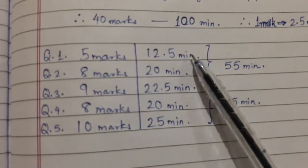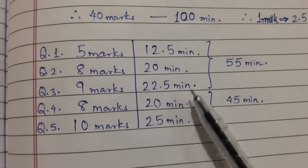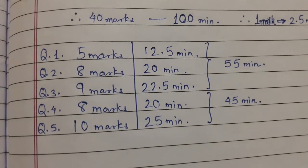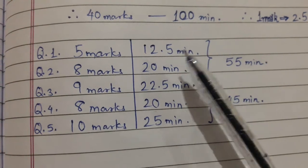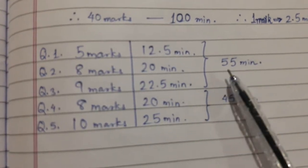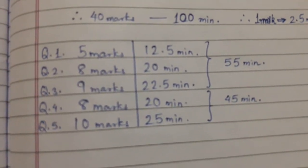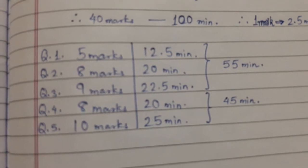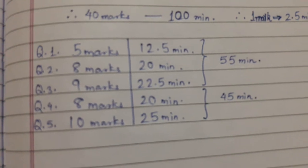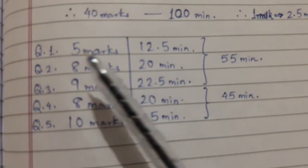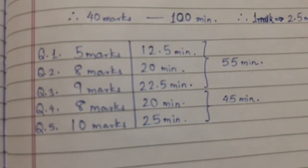So question number one, two and three should get completed in the first hour or the first half of the paper. Because if you see the total, it is 55 minutes. But with all the other activities, in the first half or the first hour, you should complete question number one, question number two and question number three.